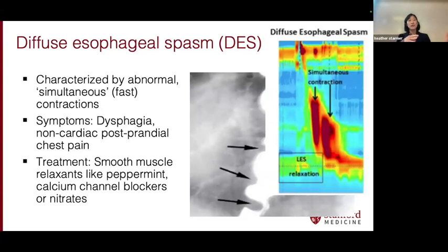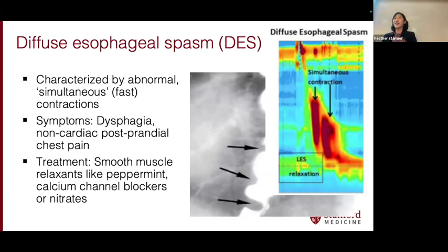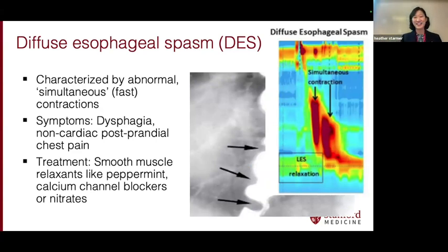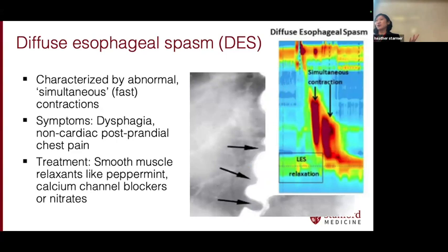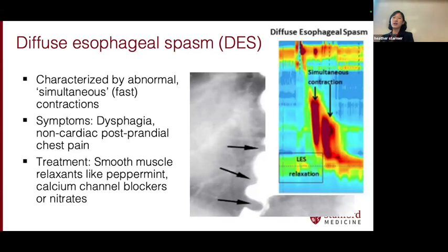In contrast to that is diffuse esophageal spasm. Your sphincter is working just fine, but your peristalsis is abnormal — the contractions are very simultaneous and very quick. They can feel like a spasming sensation, with post-prandial chest pain and dysphagia. It's very rare to see spasming on barium, but it does occur. Treatment is really directed at trying to relax that muscle. In very mild cases, I'll just use peppermint Altoids pre-prandially. In more advanced cases, I'll use medications — primarily blood pressure medications like nifedipine, diltiazem, sublingual nitrate if patients can tolerate it. Sildenafil is now a lot more affordable and that can help relax the smooth muscle.